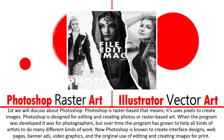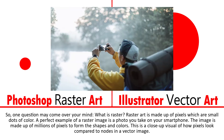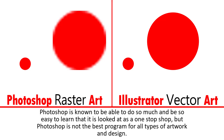You may wonder: what is raster art? Raster art is made up of pixels, which are small dots of color. A perfect example of a raster image is a photo you take on a smartphone — the image is made up of millions of pixels to form the shapes and colors. This is a close-up visual of how pixels look compared to nodes in a vector image.